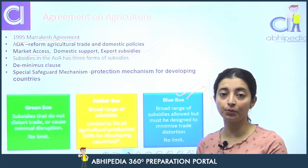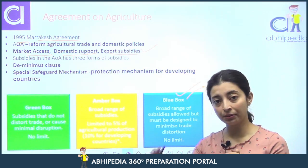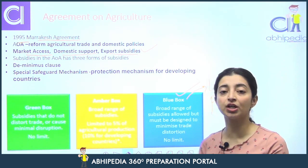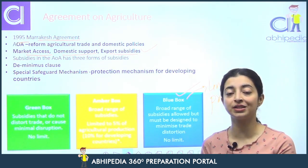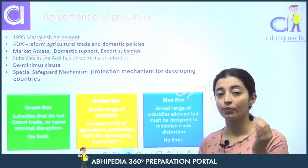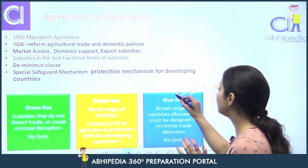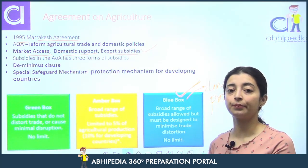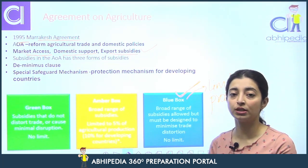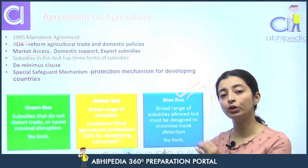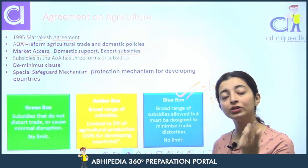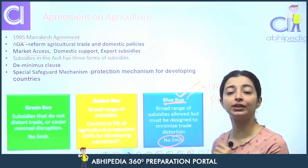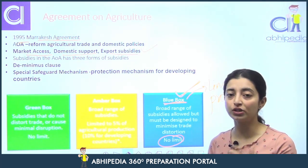Kyun limit karna padti hai production ko? Kyunki kabhi baar demand-supply mein aisa issue ho jaata hai ki supply bahot zyada barh jaati hai, toh phir prices effect ho jaate hain. That is why sometimes it is needed to cut down on production. Subsidies are provided to farmers saying: you do not produce this amount of crop, we are going to compensate you for that. WTO unpar koi limit nahi lagata, but WTO kahta hai ki ye subsidies trade ko distort na karein.